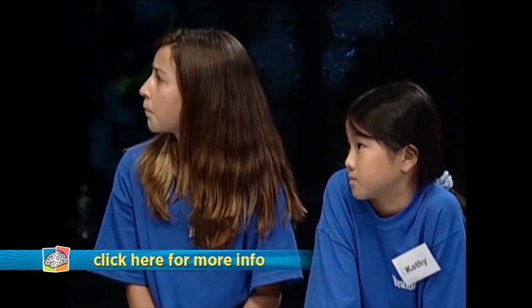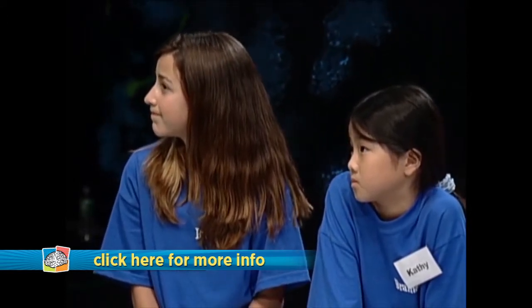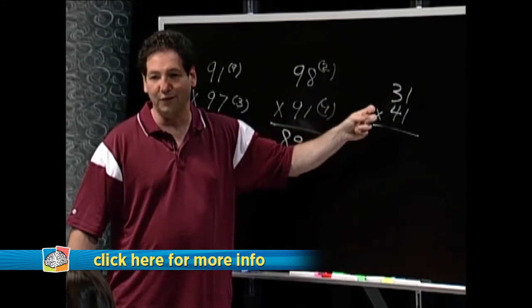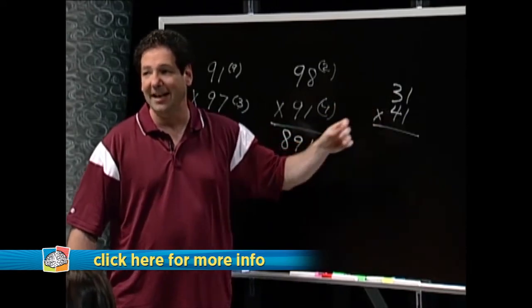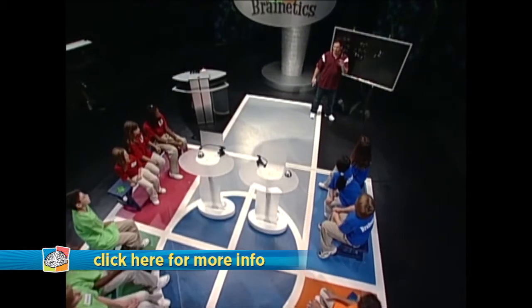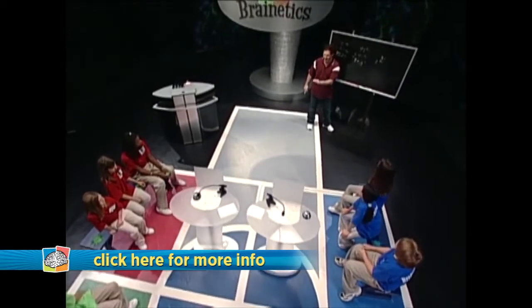Then, you add this number to it. One twenty plus three is one twenty-three, plus four is one twenty-seven, and then put a one on the end. One, two, seven, one.